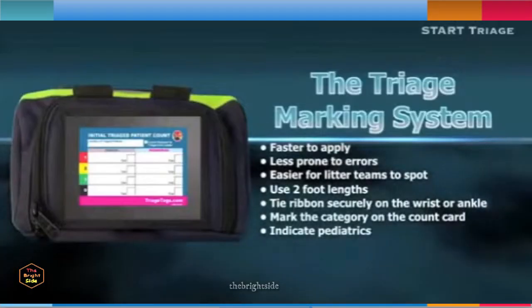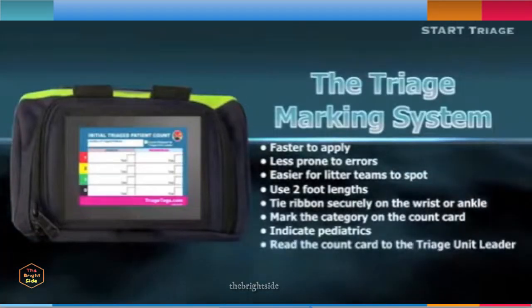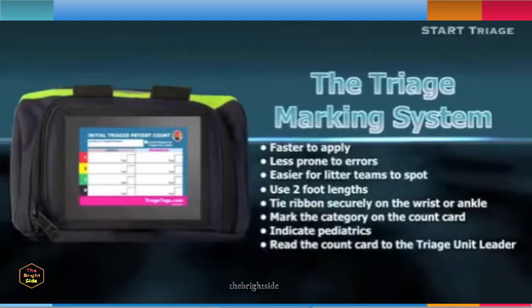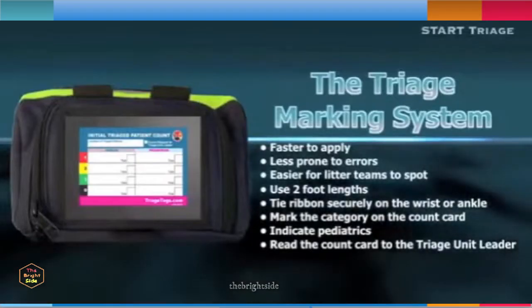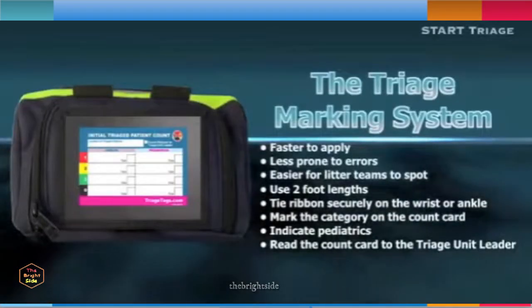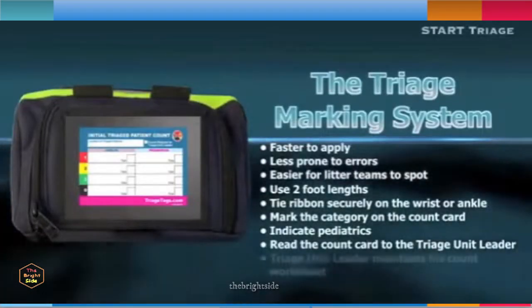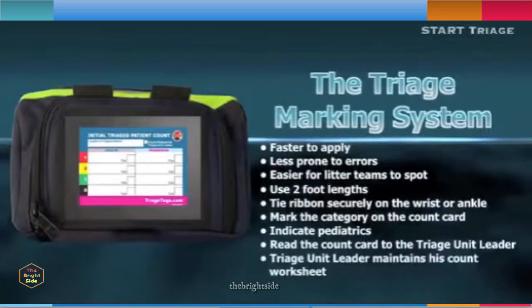When a triage member's assignment is complete, the count card is read back to the triage unit leader to provide an accurate tally of patients by acuity. Total count information will be provided to the IC through the chain of command.